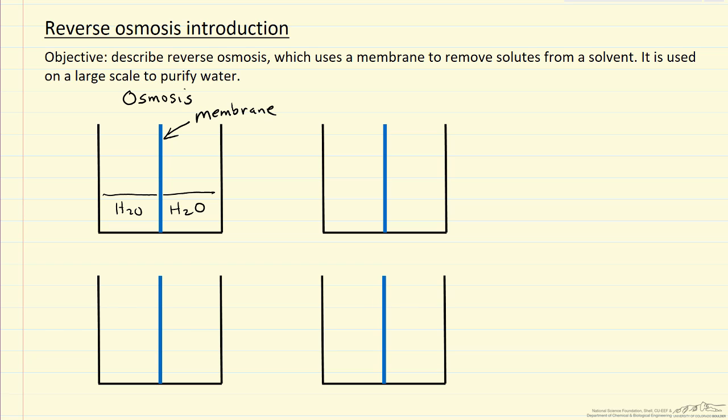Chemical potentials of water are the same on both sides of the membrane. Now what I'm going to do is add salt to the right side, and then let it go to equilibrium again. So what is it going to look like when we're again at equilibrium?